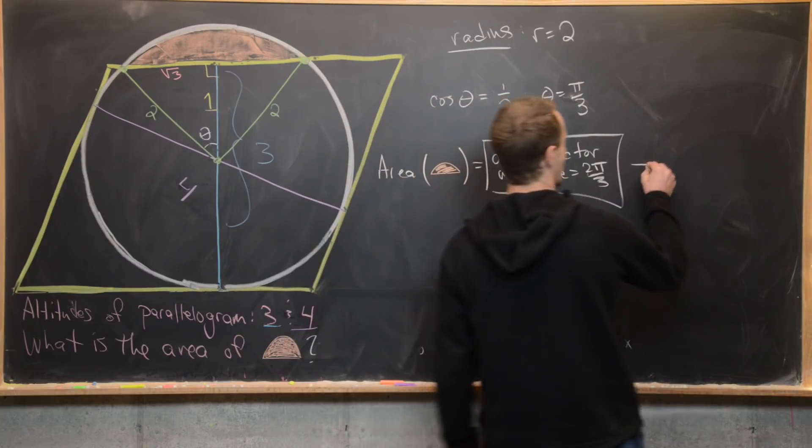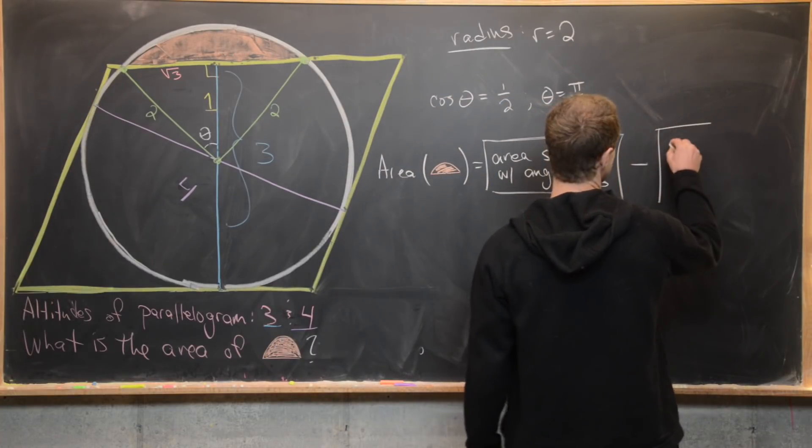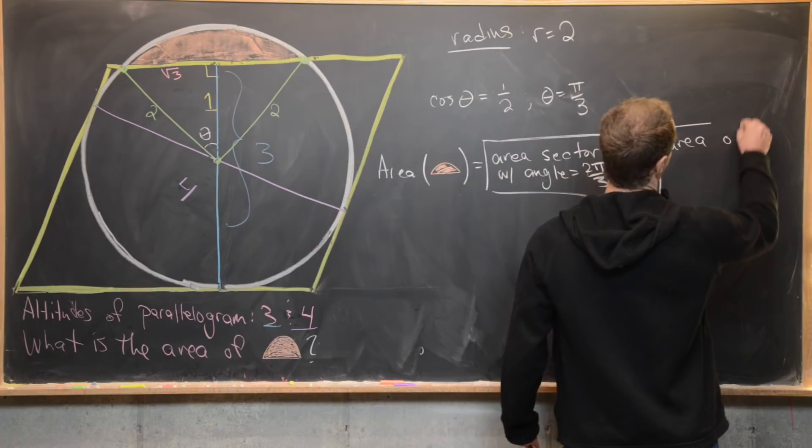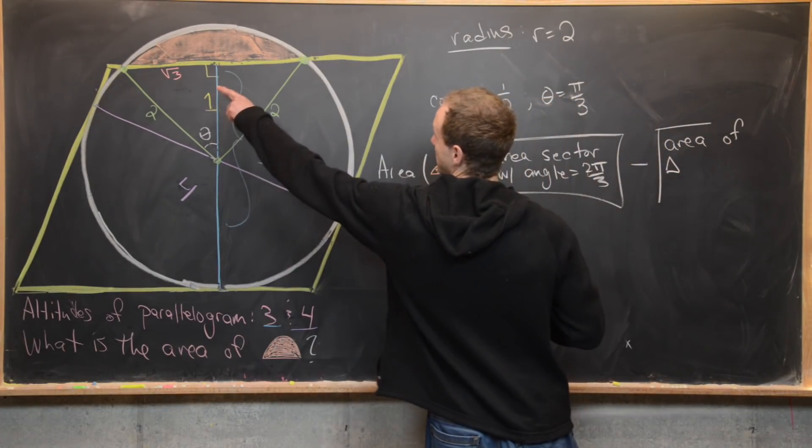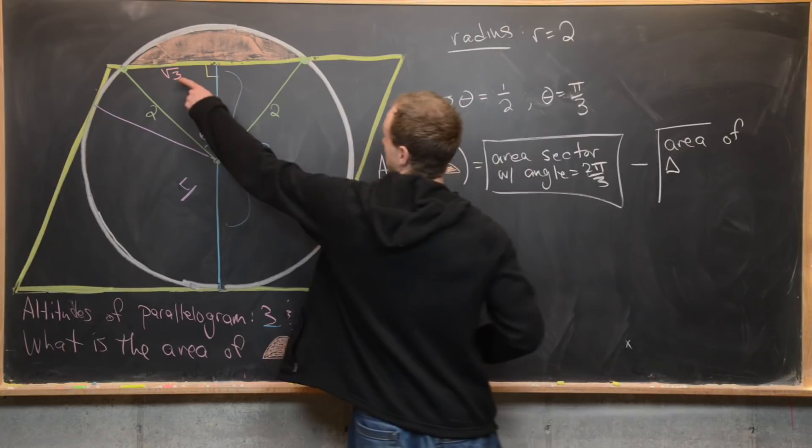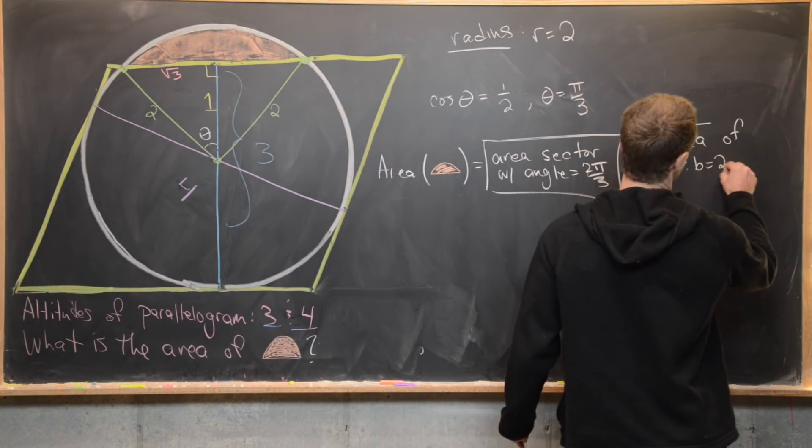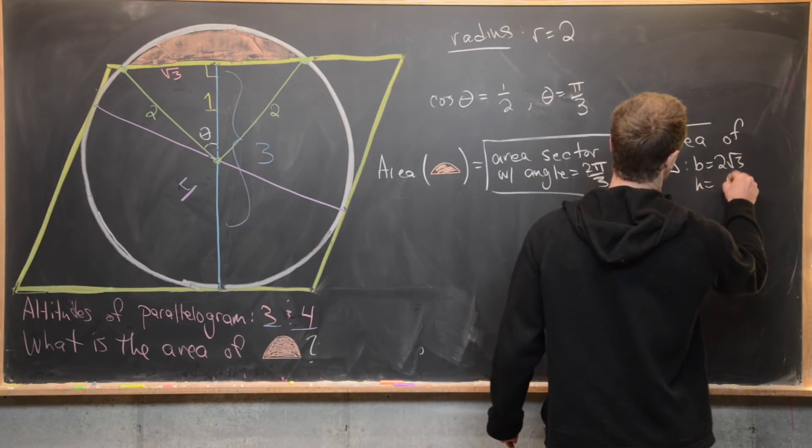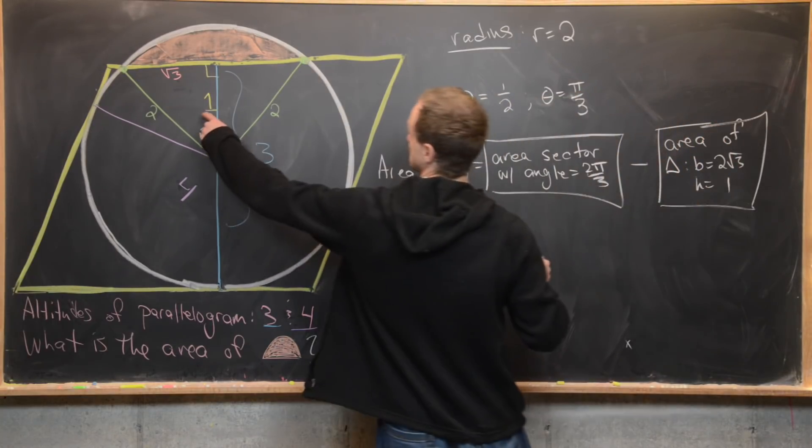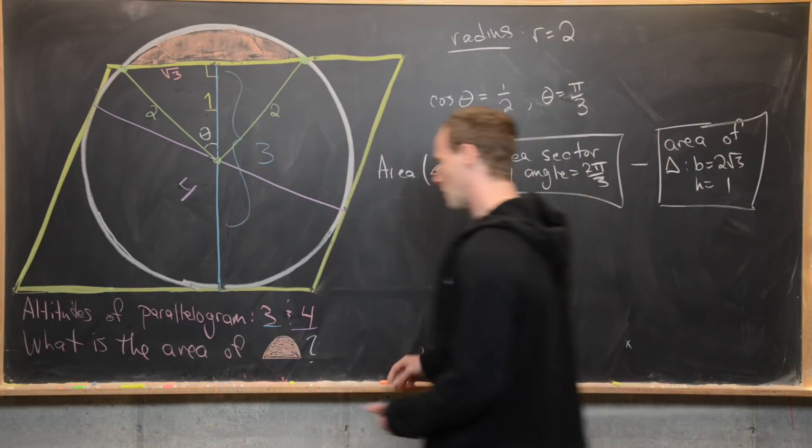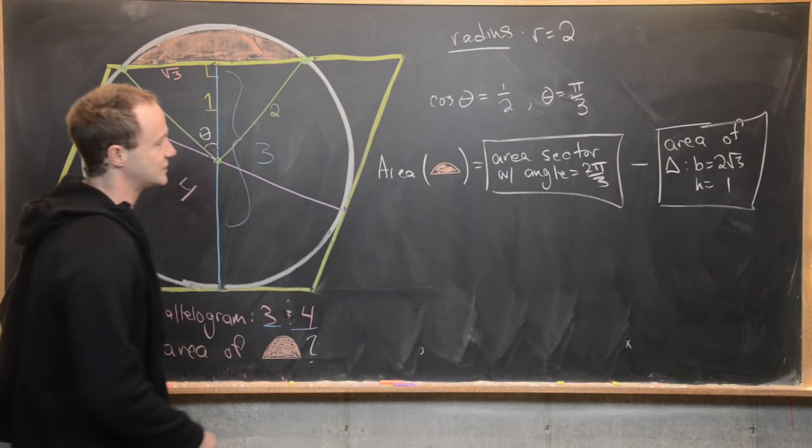And then from that, we need to subtract the area of the triangle where we have a base of—well, it's going to be root three plus root three. So that's going to be two root three and a height of one. That's because of this distance right here. So now we can use well-known formulas for each of these.